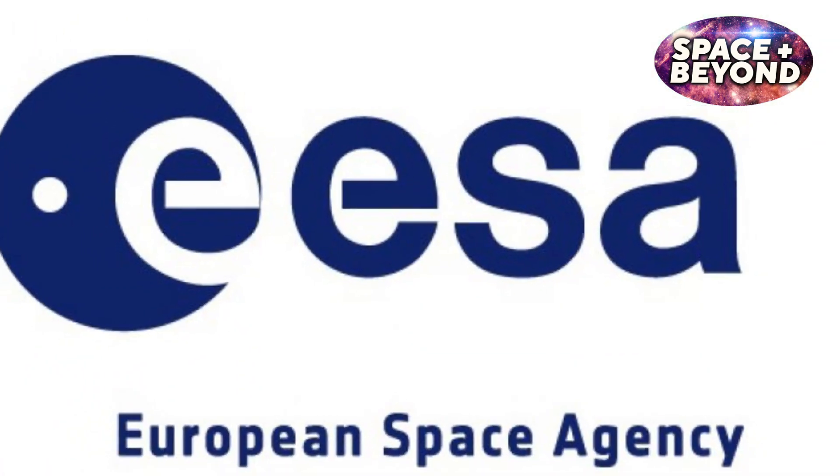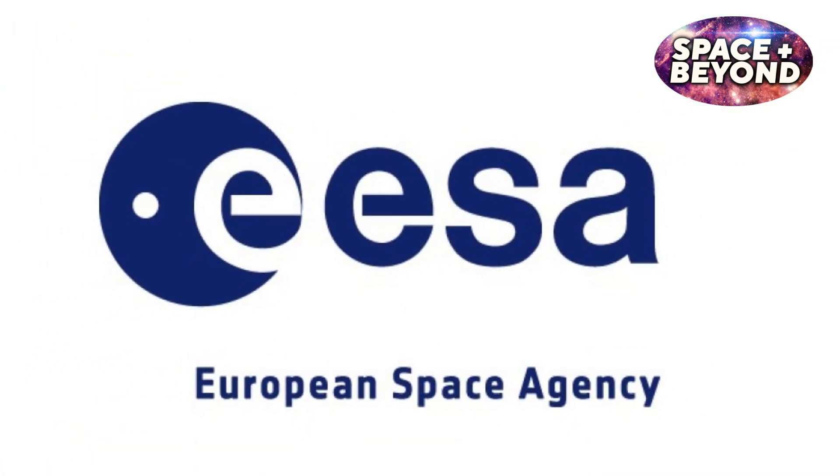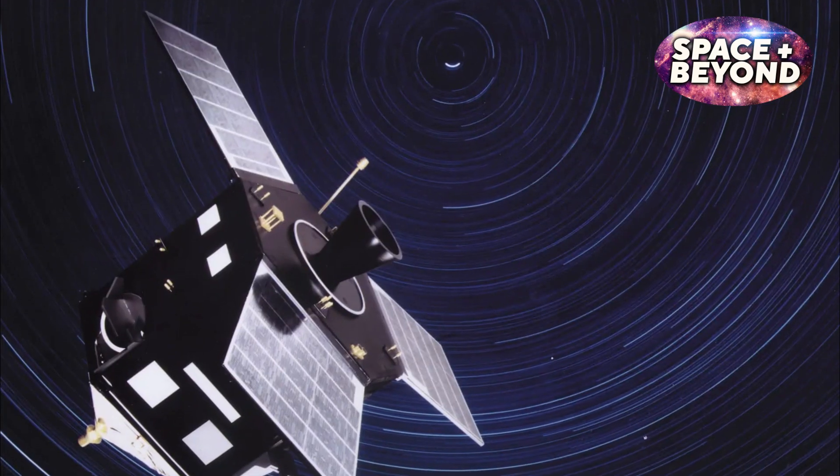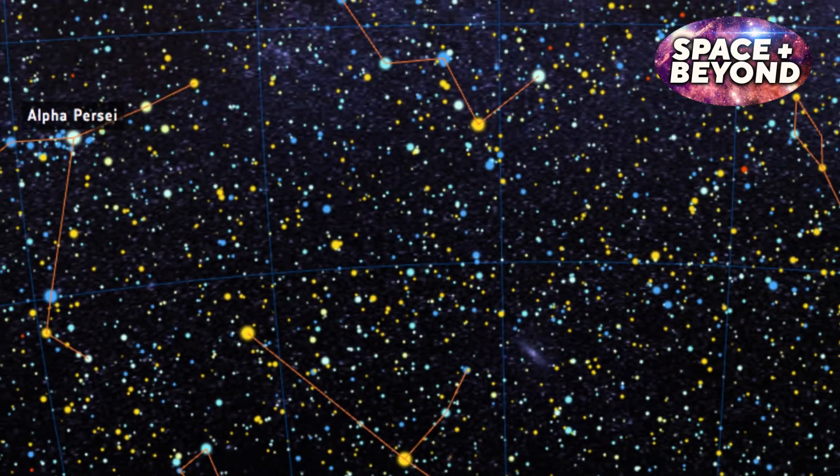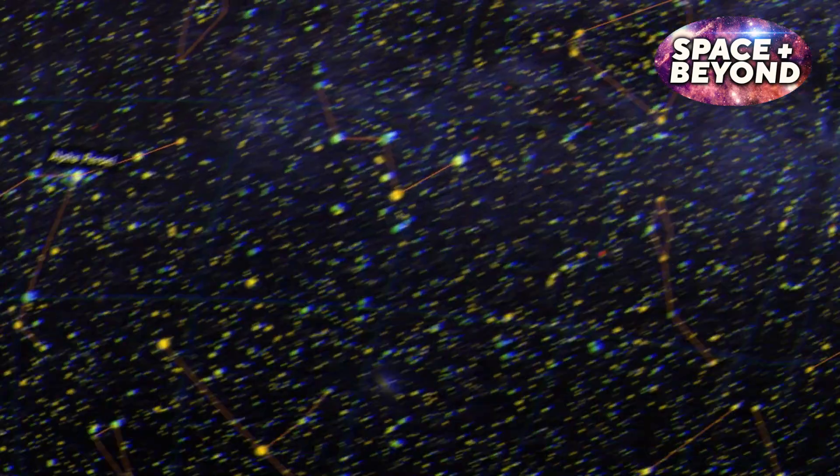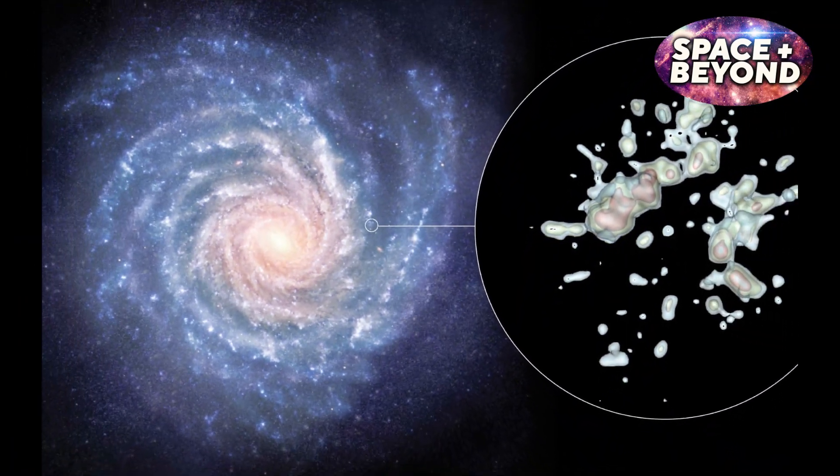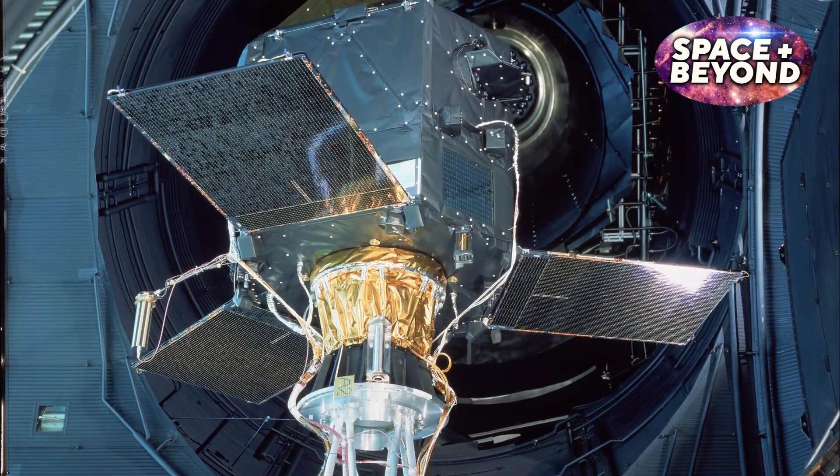Prior to Gaia, the European Space Agency had launched a satellite named Hipparchus to measure the positions, distances, and motions of stars. While Hipparchus was able to accurately measure these values for over a million stars in our Milky Way galaxy, this mission lasted only four years.